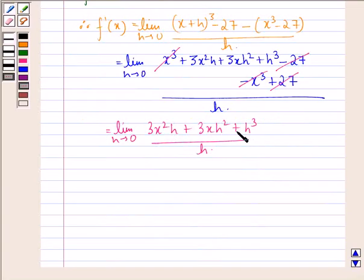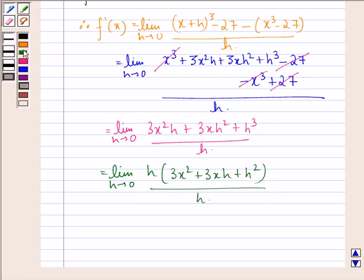Now from these three terms we can take out h common. So we have limit h approaching 0, h into 3x square plus 3x h plus h square, divided by h. This h gets cancelled with this h.